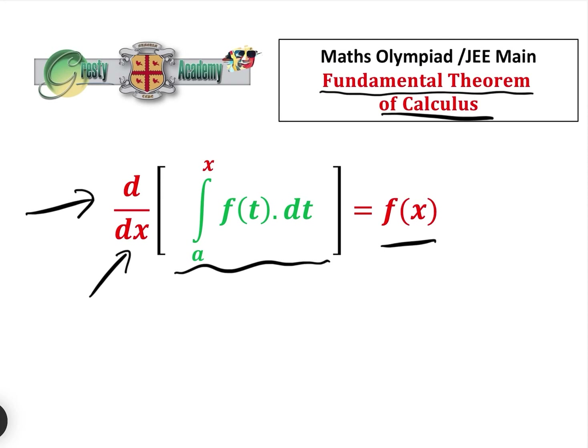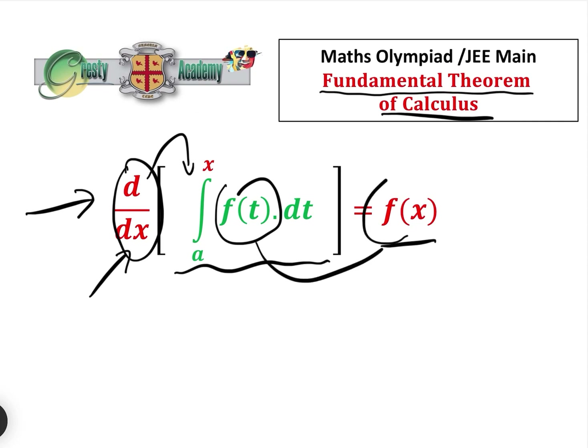Most people don't have a problem with the idea that when you differentiate an integral, you get back where you started. But where they do have a problem is: why does the f(t) change to f(x)?